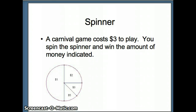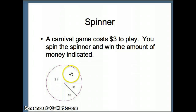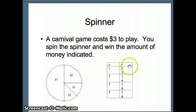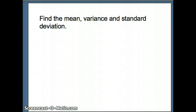Our next example is a carnival game. It costs $3 to play. You spin a spinner: landing in region 1 collects $1, region 2 collects $2, region 3 collects $3, and region 4 collects $5. The probability of landing on $1 is 1/2, on $2 is 1/4, on $3 is 1/8, and on $5 is 1/8. From that we can construct a random variable with outcomes 1, 2, 3, 5 and corresponding probabilities 1/2, 1/4, 1/8, 1/8.